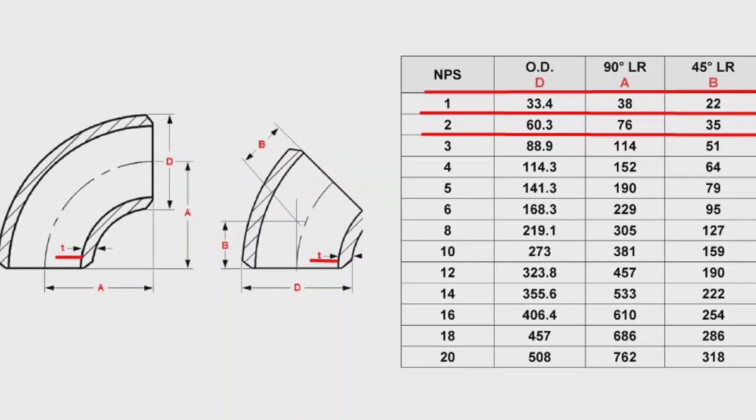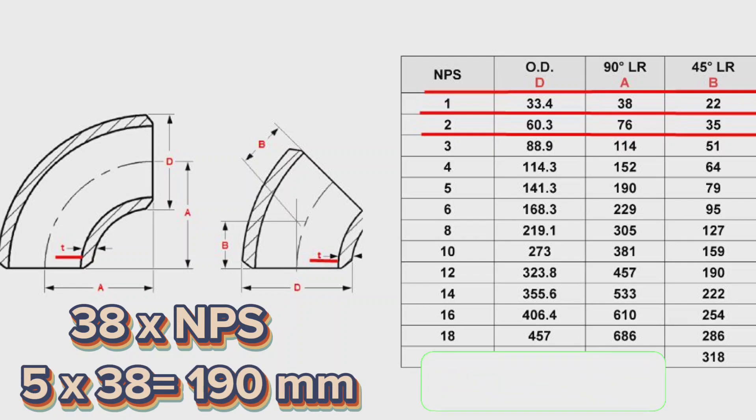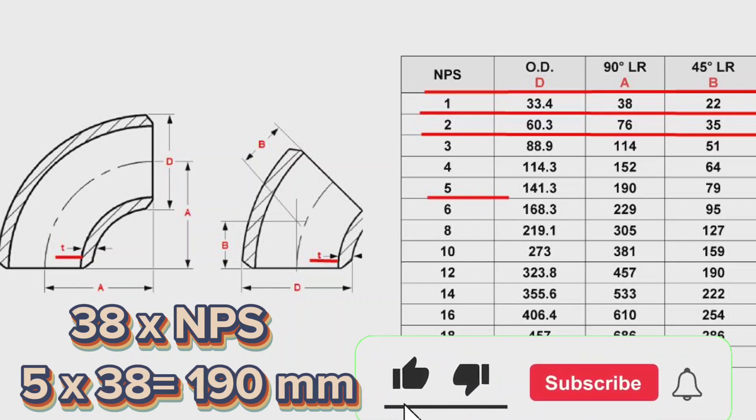We saw that, in order to find the long radius 90 degree elbow size, you have to multiply 38 to pipes NPS, nominal pipe size. For example, to find a 5 inch elbow size, we need to multiply 5 by 38. 5 times 38 is equal to 190 mm. This means that a 5 inch elbow measures is 190 mm.